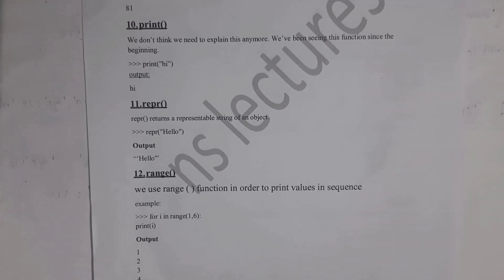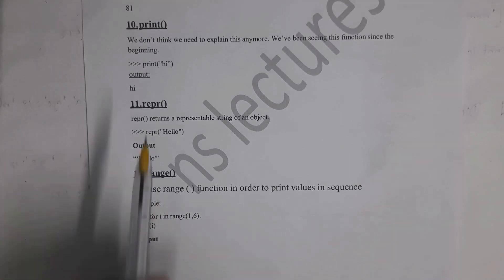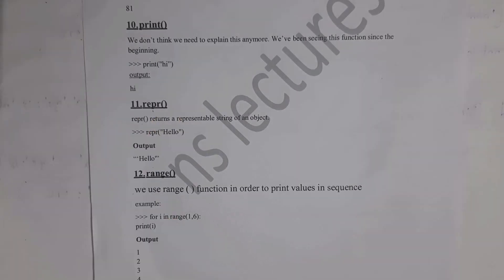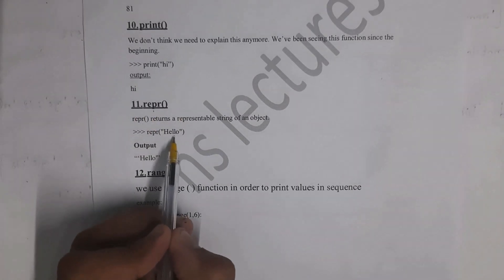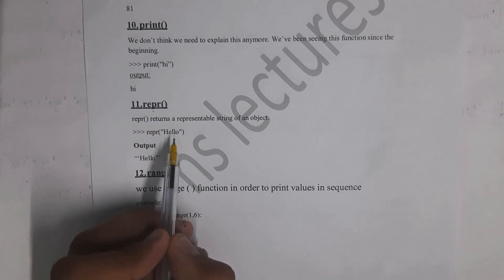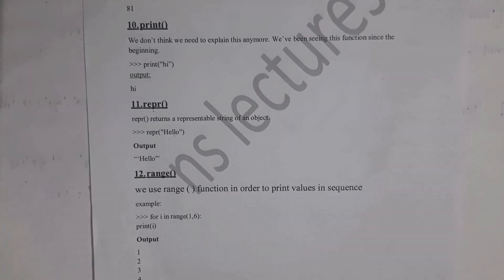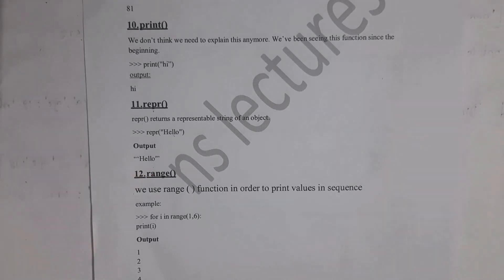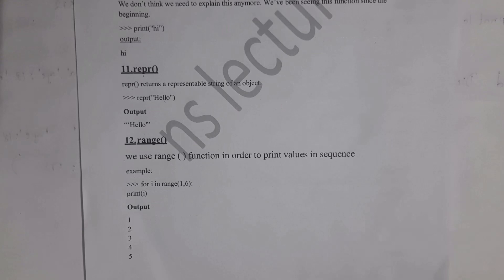Next is the repr function, where repr stands for representation. For example, repr('hello') — where 'hello' is a string in double quotations — will represent the string in quotations, so you get output 'hello' in quotes. Next is the range function, used to print values in sequence.